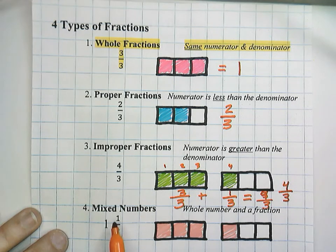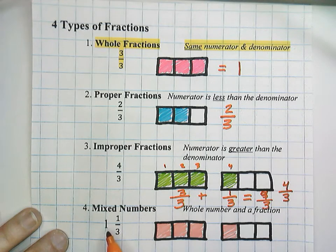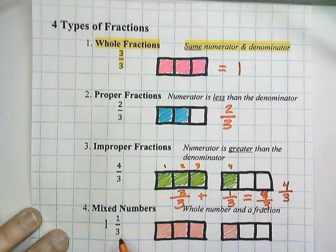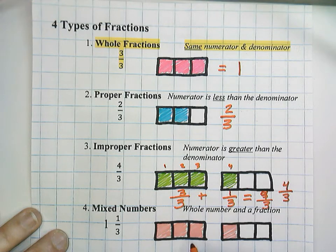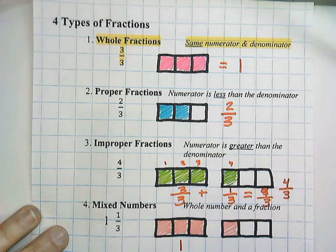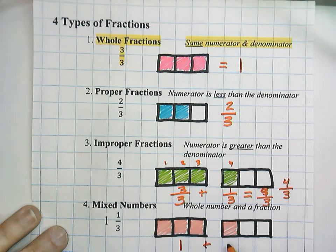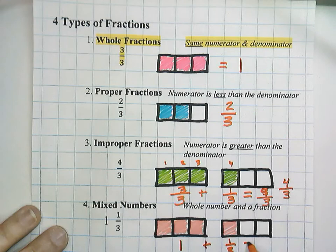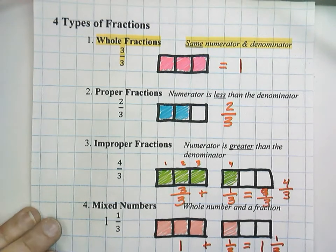The last kind of fraction would be mixed numbers. A mixed number is when we have a whole number and a fraction. For example, 1 and 1 third is called a mixed number. If you look at the model, here we have 1 whole, and we add that to 1 third on the right, and that would equal a total of 1 and 1 third.